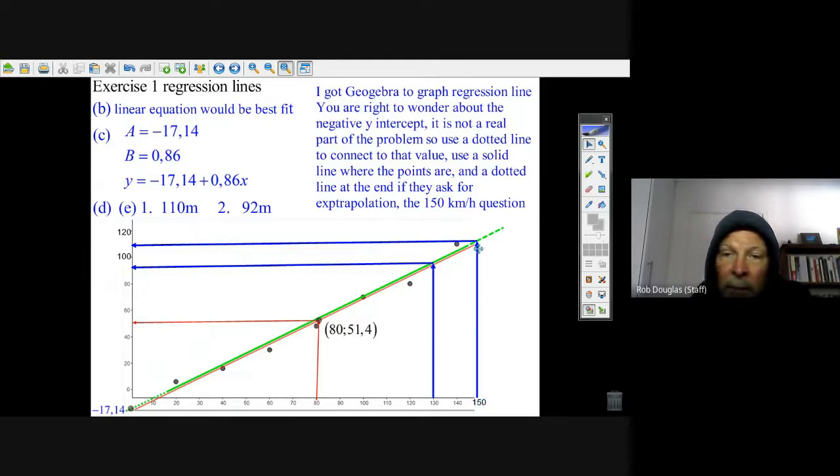150 is extrapolation, so I run up to the line which is kind of dotted here because it's beyond it, and then I run over and I get pretty close to 110 meters. That's how you do an estimate.